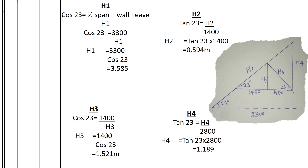The 3300mm is half the span of the truss. We took the inner dimensions of 2800mm, plus 200mm for the walls, plus 300mm for the eaves, giving us 3300mm. Using adjacent over hypotenuse, H1 equals 3300 divided by cos 23°, which gives us 3.585 meters — the length of all rafters.